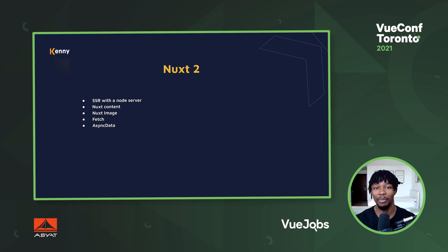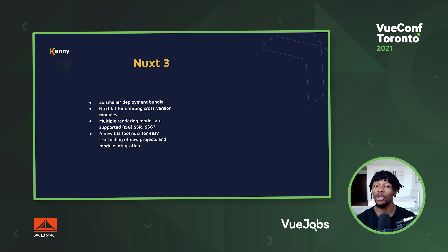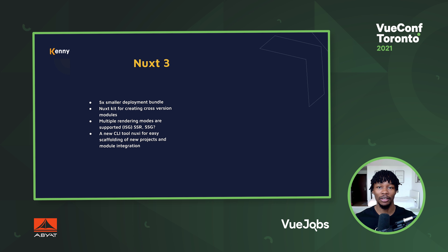But like everything else in tech, there's always advancements and enhancements and new versions coming out every day. So today we have Nuxt 3, which gives us even more extended features. We have five times smaller deployment bundle, meaning your Nuxt 3 application's bundle size is going to be way smaller compared to the same application built with Nuxt 2. We have the Nuxt Kit for creating cross-version modules and multiple rendering modes out of the box - including incremental static generation, server-side rendering, and static generation.